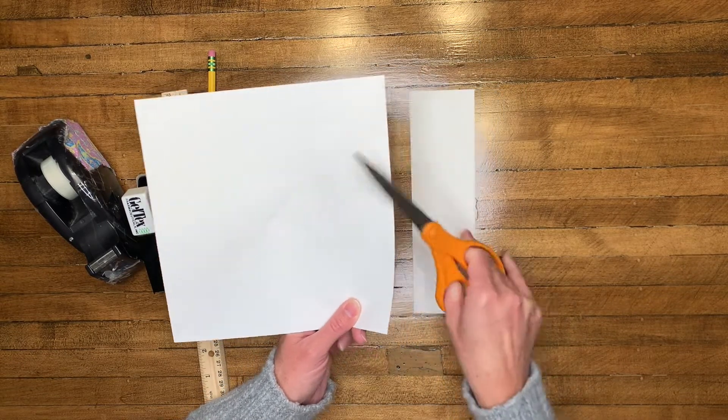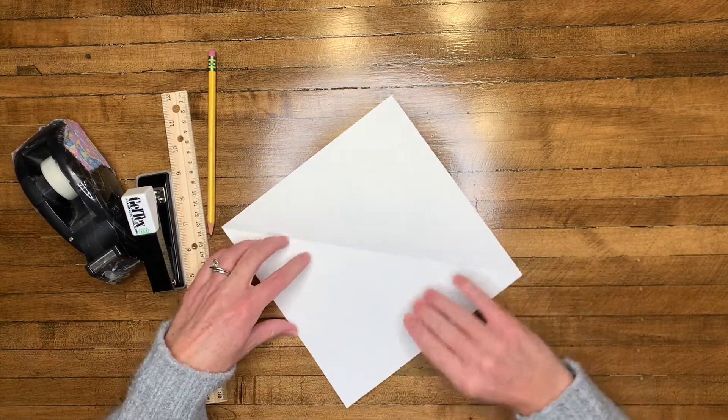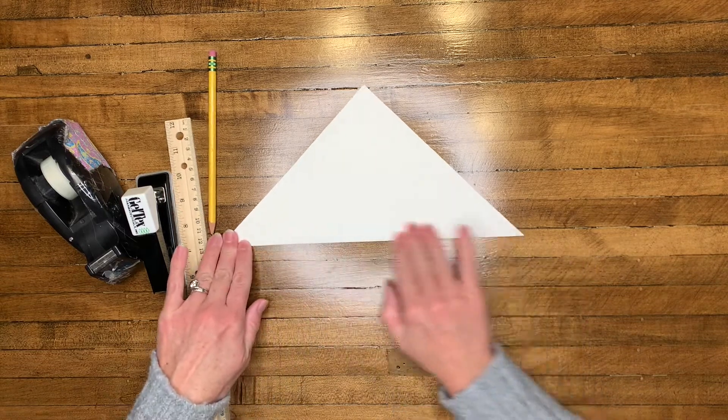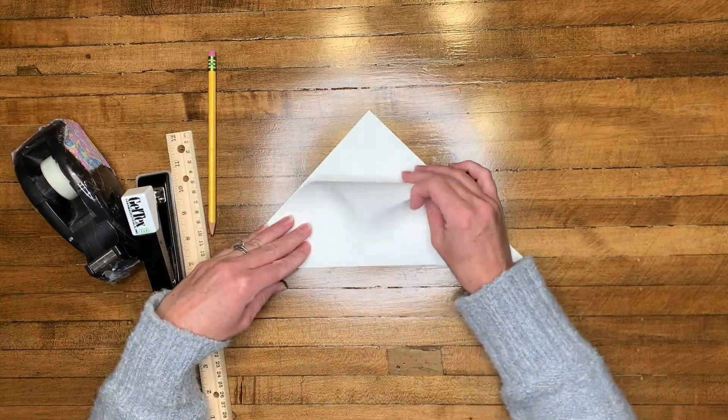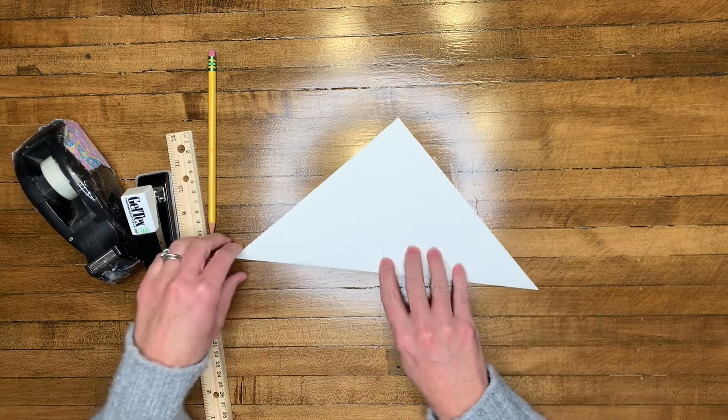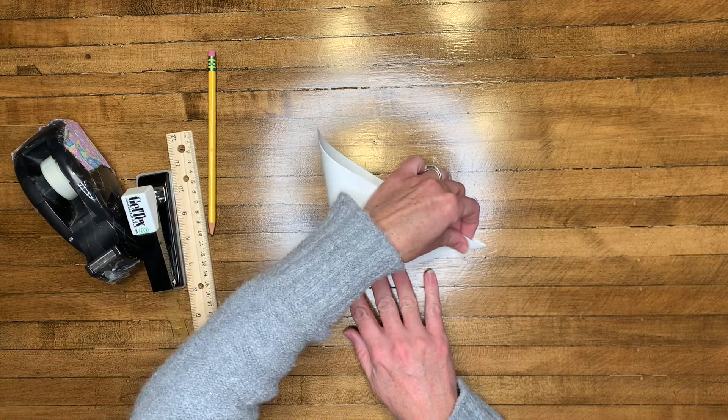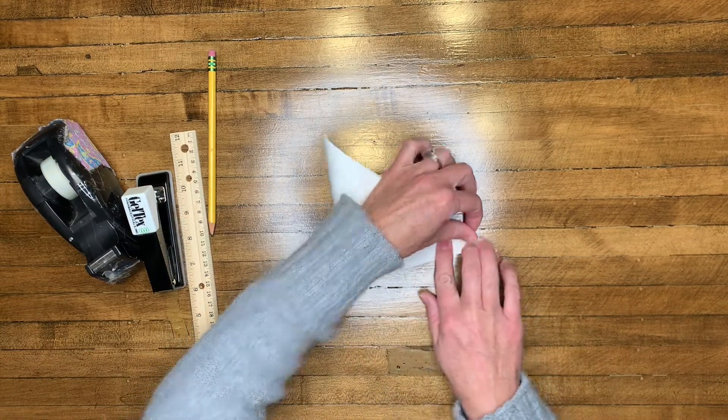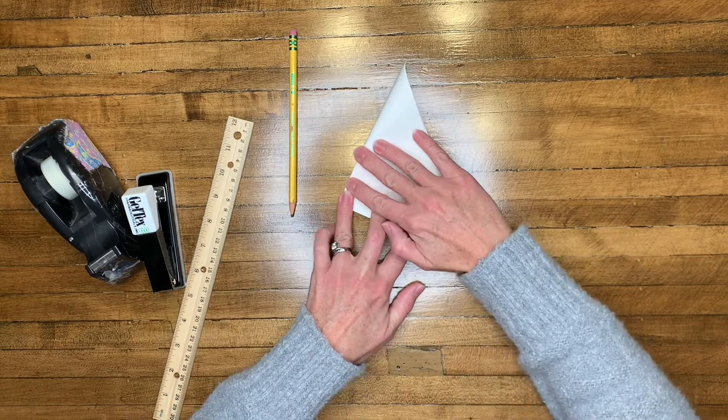Once you have your square, you want to make sure that your paper is folded in the middle on the diagonal. Make sure the fold is on the bottom and the open flap is at the top. You're going to connect the two bottom corners by touching them together and then folding the crease on the left hand side.